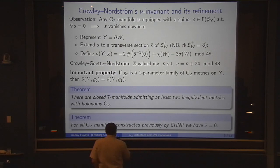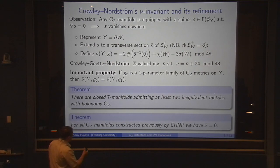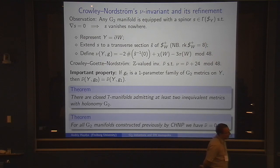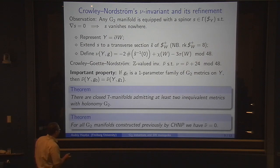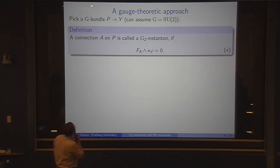This invariant is good enough to show that there are closed G2 manifolds which admit inequivalent G2 metrics. We know that the moduli space of G2 metrics is disconnected. However, for all G2 manifolds constructed previously by Corti, Haskins, Pacini, and Nordström, we have the same value of the invariant, so they are not distinguished by nu bar.